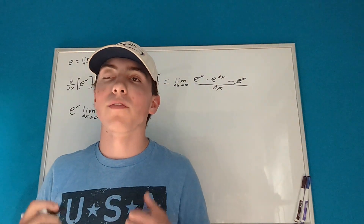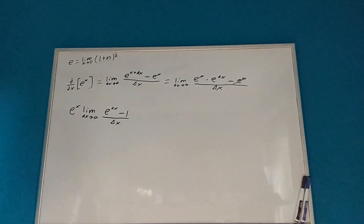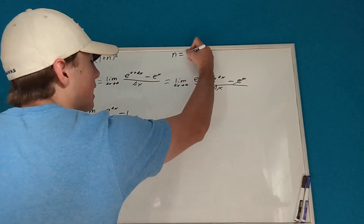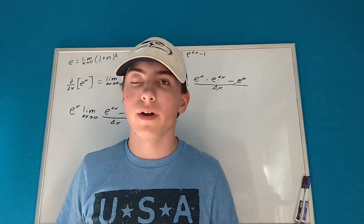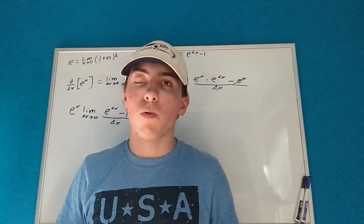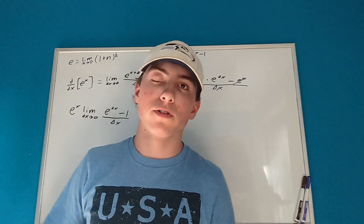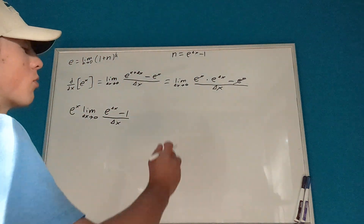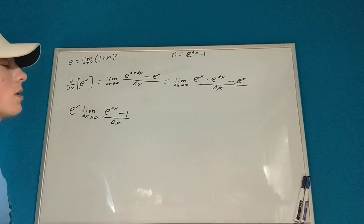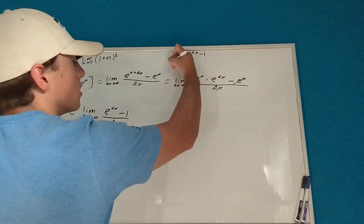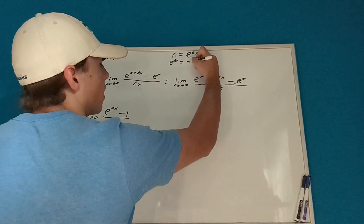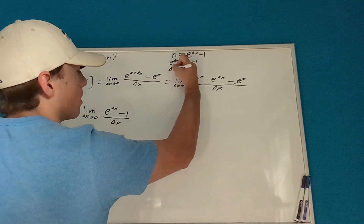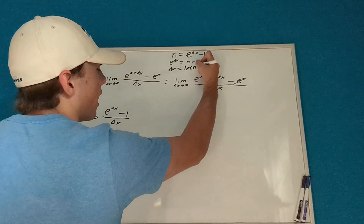What we want to do is define a new variable. We're going to let n equal e to the delta x minus 1, because we're trying to work towards something that looks like Euler's number definition. You can define variables as you like in algebra as long as the equality stays true. So with n equal to e to the delta x minus 1, we solve for delta x: e to the delta x equals n plus 1, and taking the natural log of each side gives us delta x equals the natural log of n plus 1.